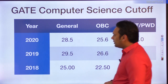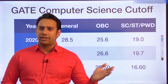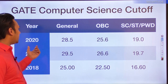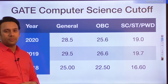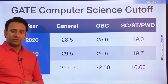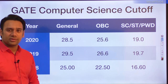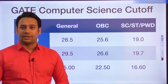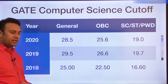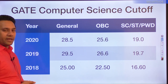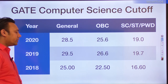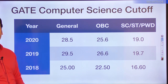The total cutoff marks for GATE varies from approximately 25 to 28.5. In 2020, the cutoff for General category was 28.5, for OBC it was 25.6, and for SC/ST it was 19 — all out of 100. In 2019, the General cutoff was 29.5, OBC was 26.6, and SC/ST and PWD was 19.7. In 2018, General was 25, OBC was 22.5, and SC/ST and PWD was 16.60.